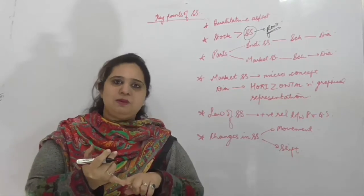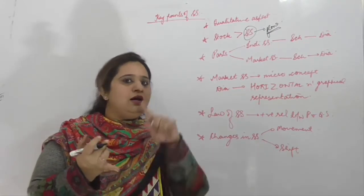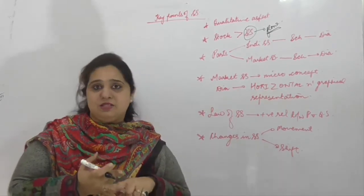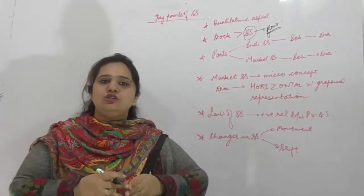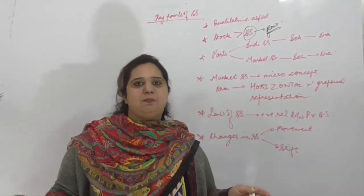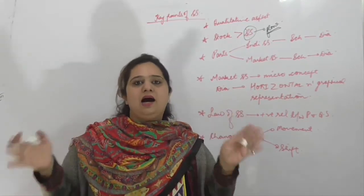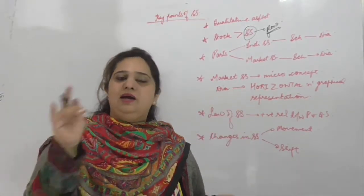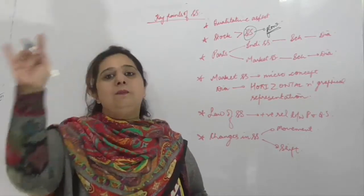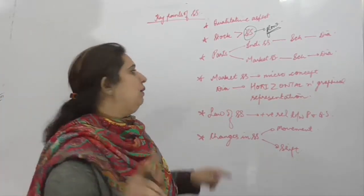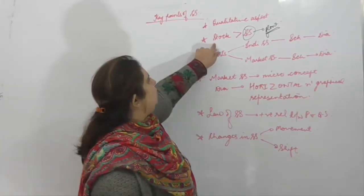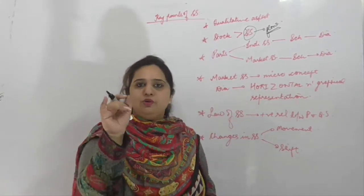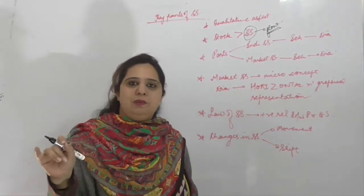Per day के basis पर supply अलग, per week के basis पर अलग, per month के basis पर अलग, per year के basis पर अलग। But stock — stock तो आपकी potential supply है। यह बताता है कि आपकी production capacity इतनी ज़्यादा है, लेकिन अभी आप वो portion market में नहीं लेकर आ रहे हो, because you are not getting a right price for the commodity।